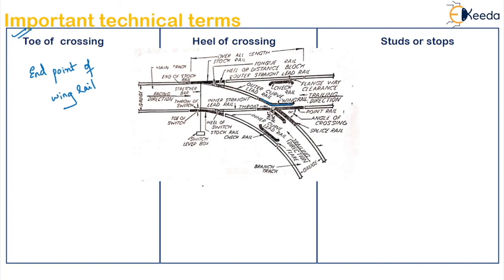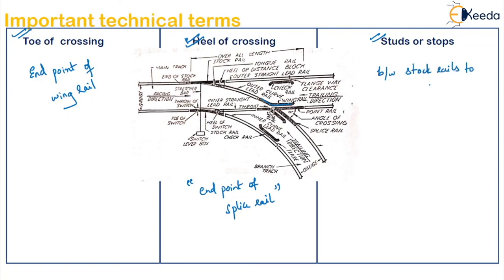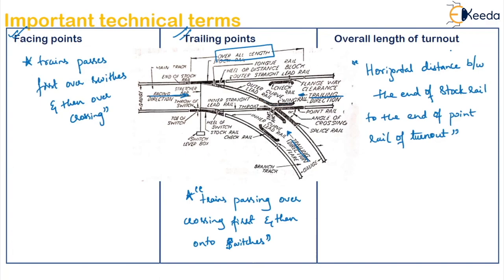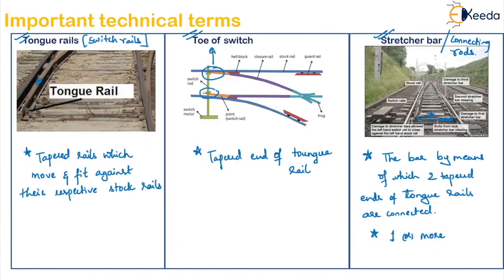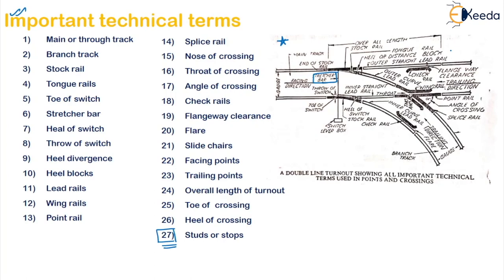The heel of crossing is the end point of the splice rail. The last one is studs or stops — bent up plates fitted to the web of the stock rail by means of bolts, so as to prevent the lateral bending of the tongue rails, are called studs or stops. These are all the different important technical terms you need to understand to proceed with the chapter further.